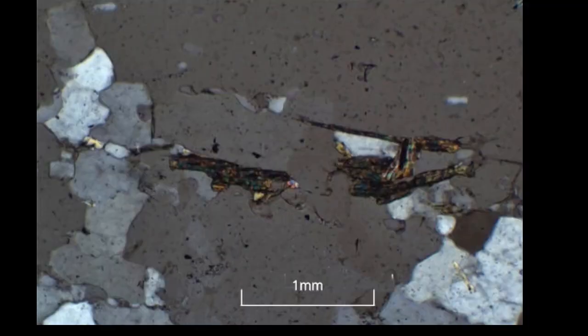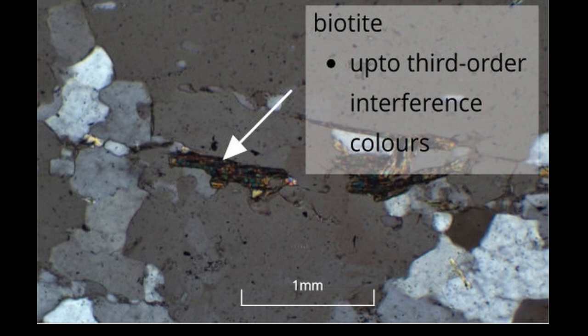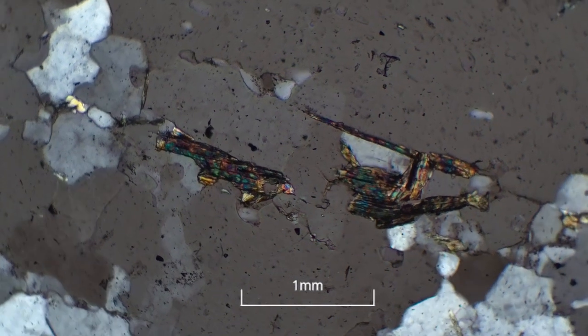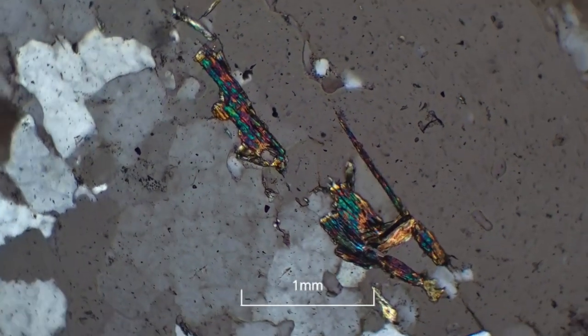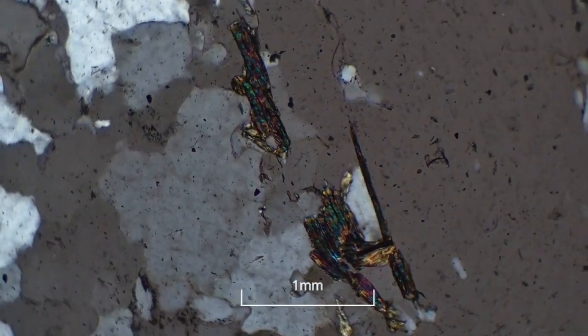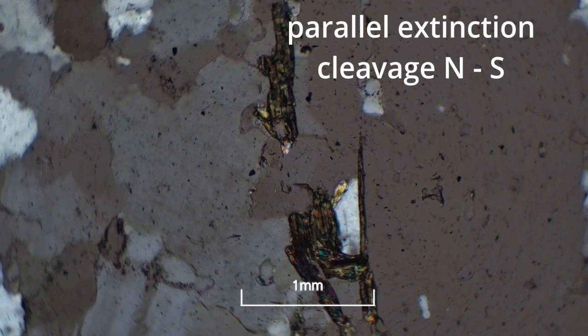Under crossed polars, biotite mica shows up to mid third order interference colours. But the interference colours are sometimes masked by the strong colour of the mineral. As the stage is rotated, the mineral has a parallel extinction. That is, extinction that is parallel to the cleavage direction when it is north-south or east-west.